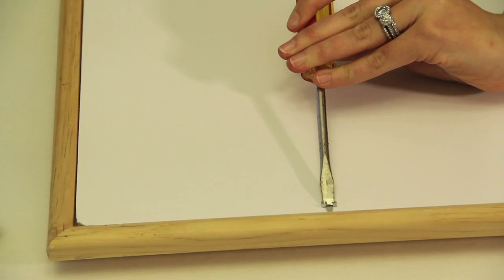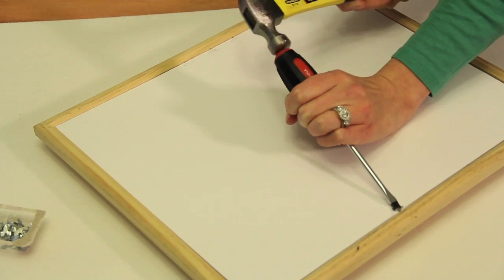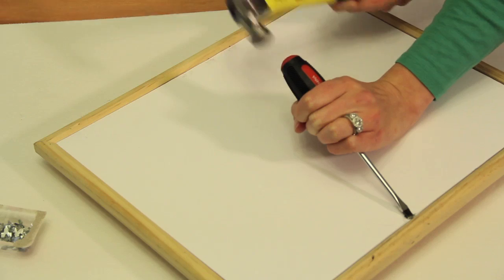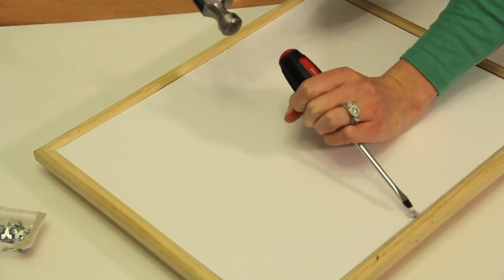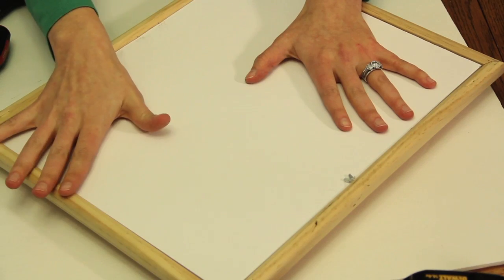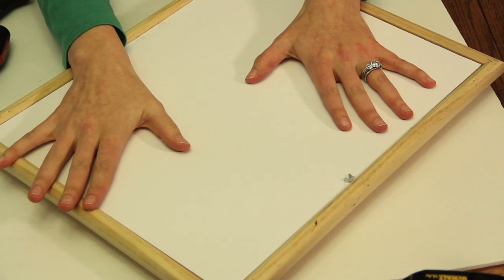Once you've done that, take your hammer. If you're going to do this all the way around, I'd probably do 10 glazing points on the long side and around six on the short side.